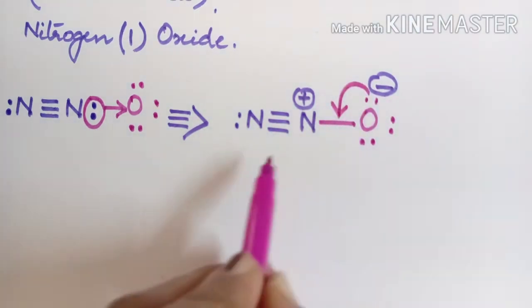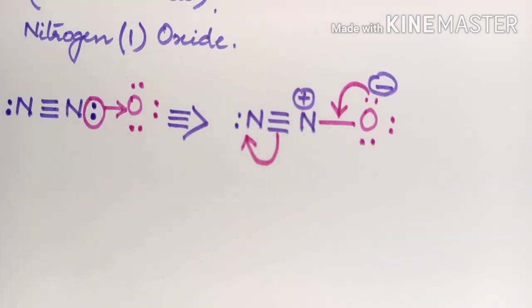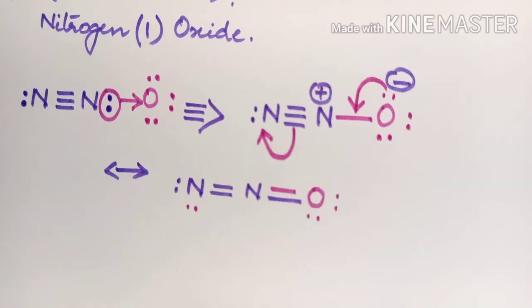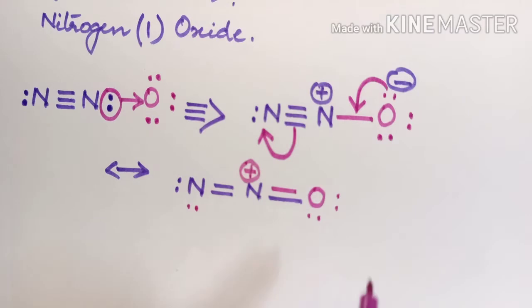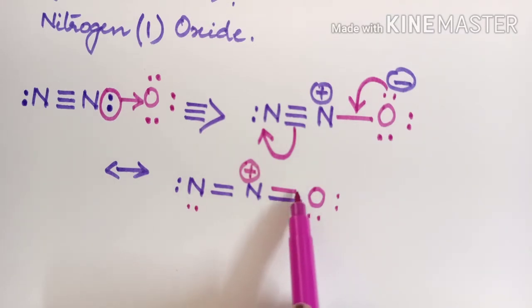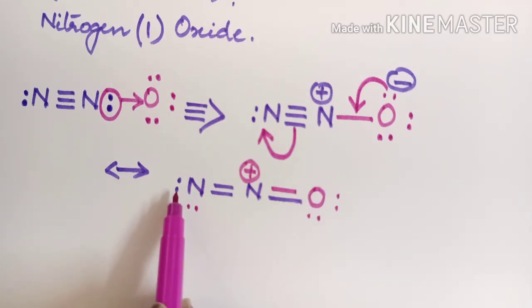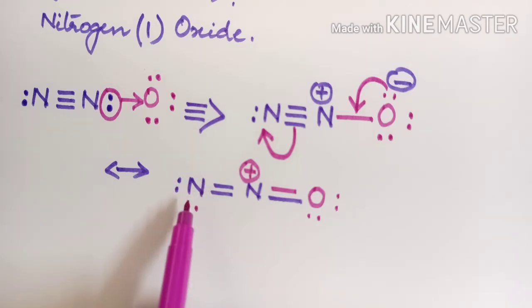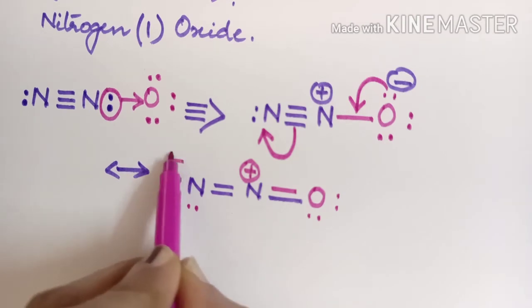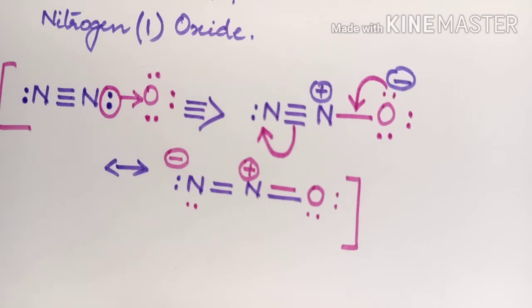Electrons can drift from the negative side into the pi electrons, so these pi electrons get rearranged and we have the next structure. The middle nitrogen again carries only four electrons so it carries a positive charge. Oxygen becomes neutral, and the nitrogen at the rear end has one extra electron carrying a negative charge. These are the resonating structures of nitrous oxide.